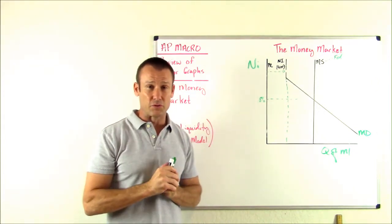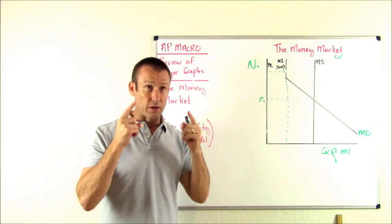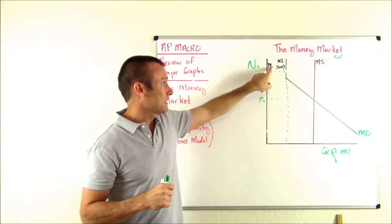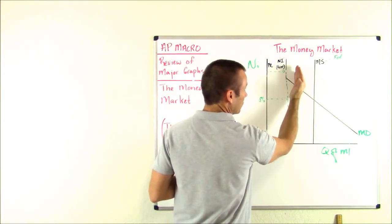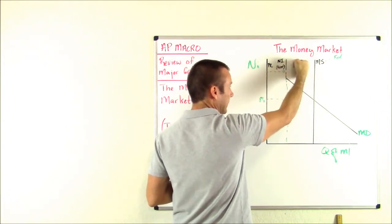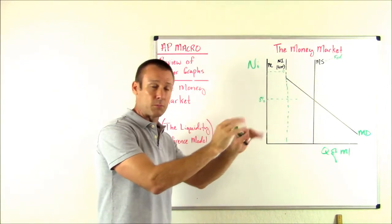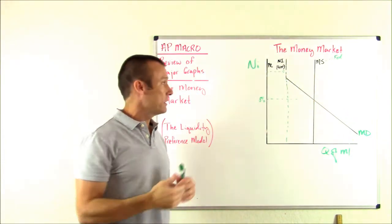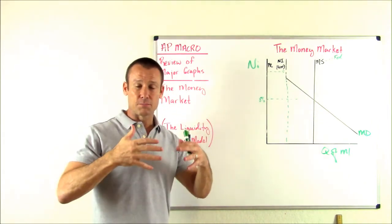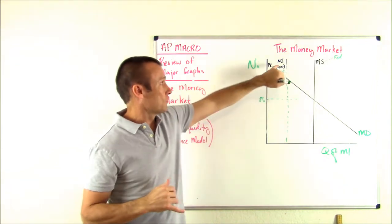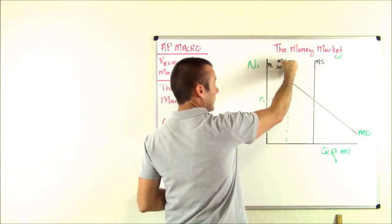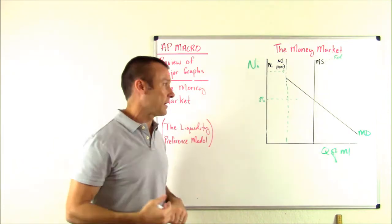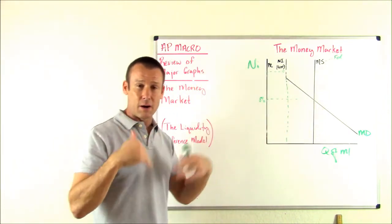If the price level increases, the transaction demand for money shifts to the right, and the asset demand goes with it. We intersect the money supply at a higher point — the nominal interest rate goes up. If national income goes down, shift money demand left: transaction demand decreases, asset demand follows, we intersect the money supply at a lower point, and the nominal interest rate goes down.